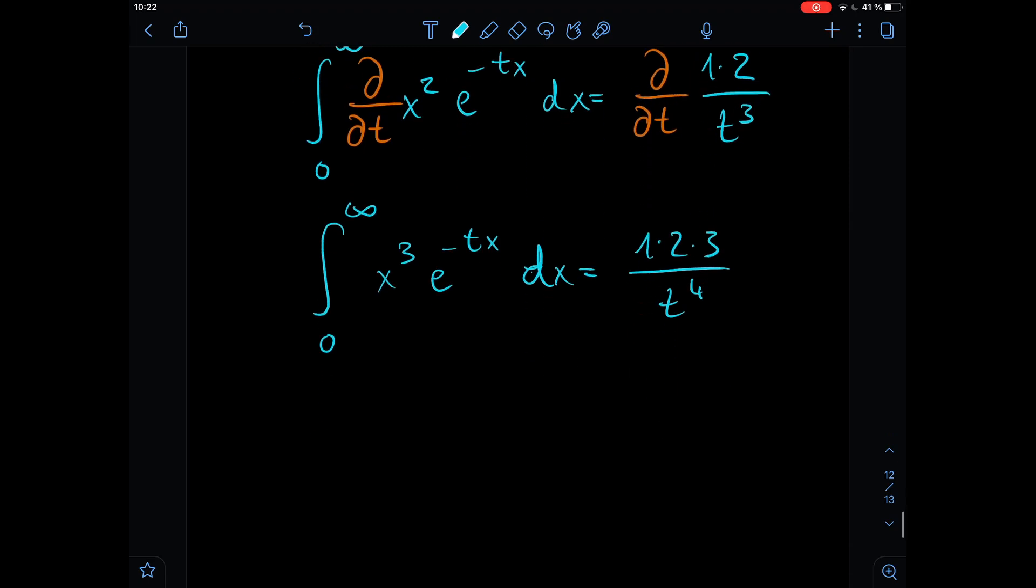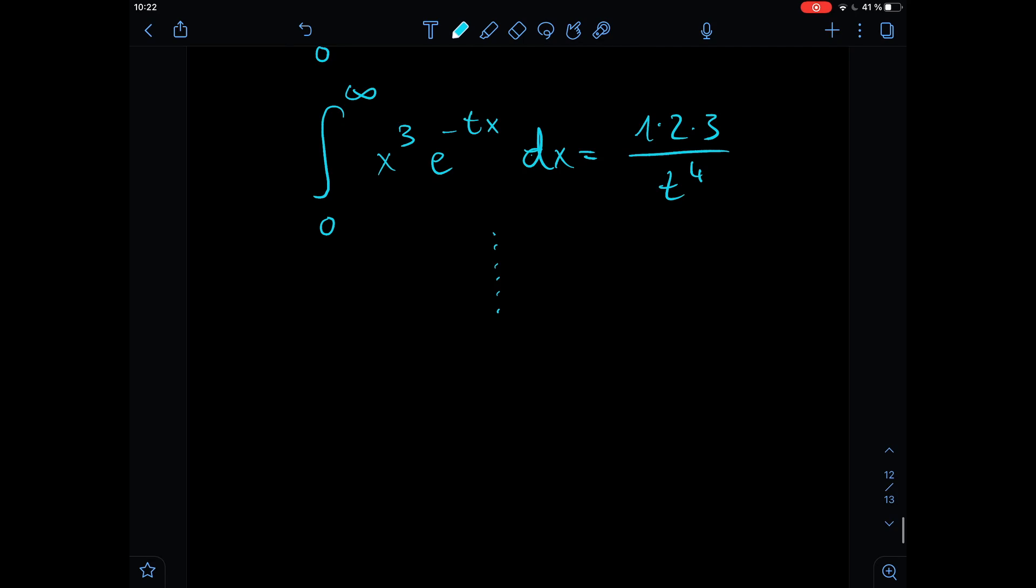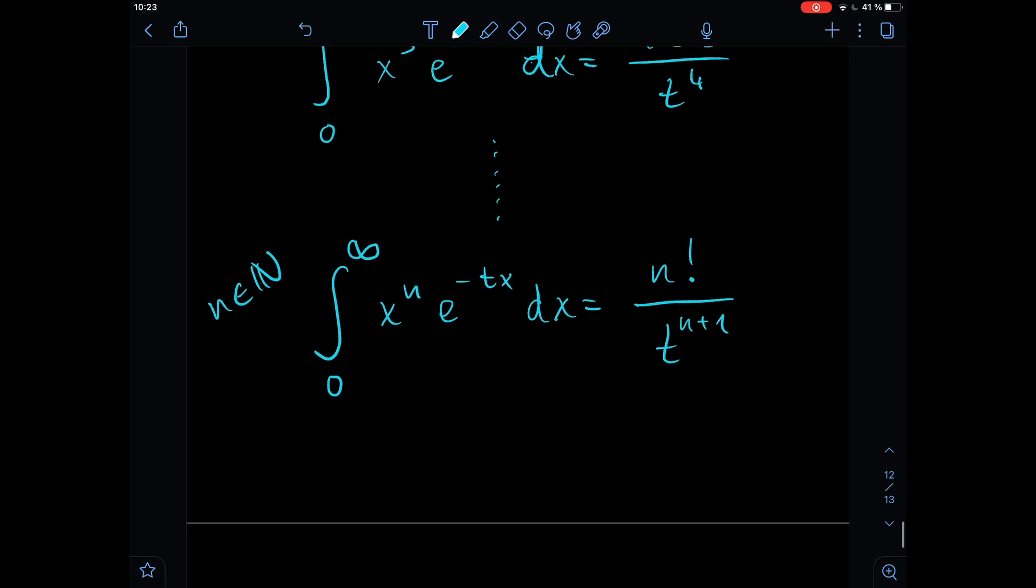And you can already see where this pattern is leading us, because it's leading us to the integral from 0 to infinity with some natural number as an exponent times e to the power of minus tx dx, and the whole thing is equal to n factorial divided by t to the power of n plus 1.